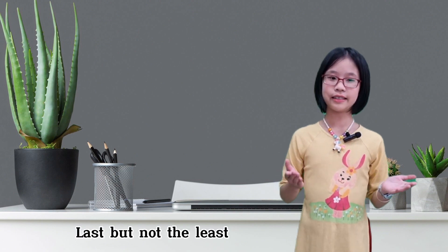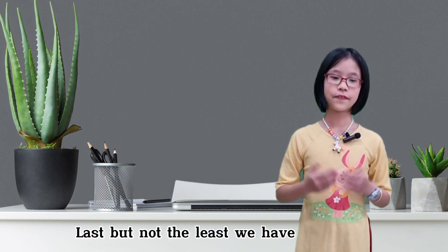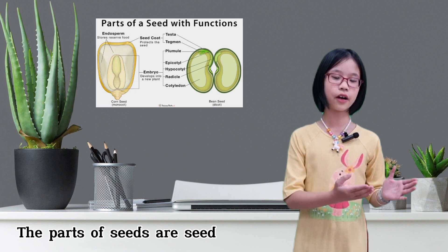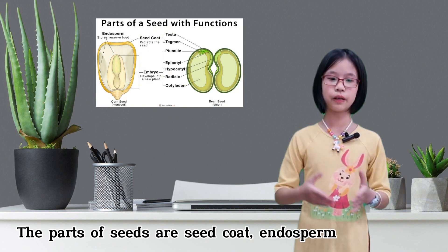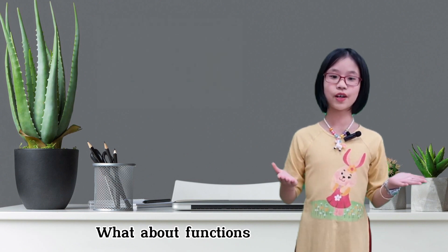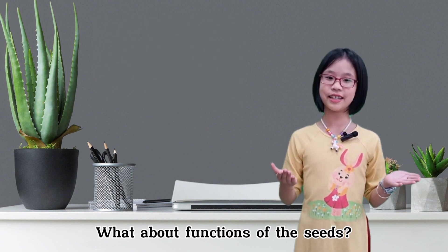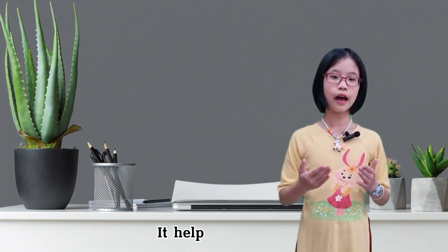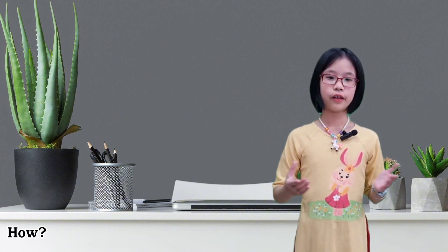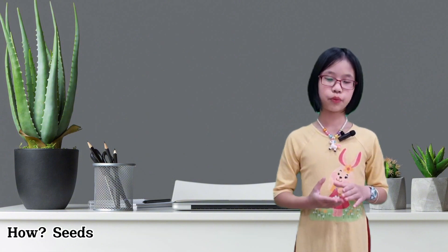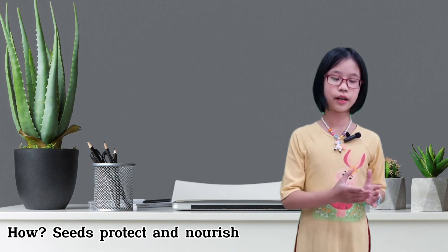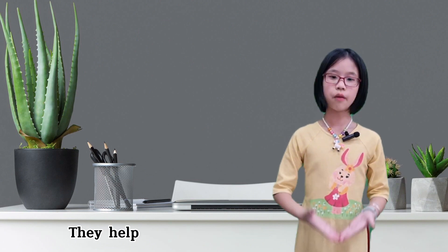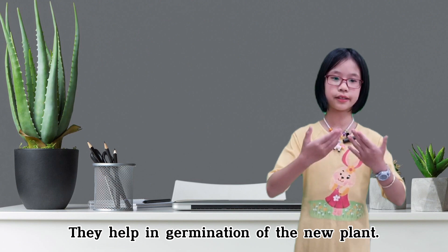Last but not least, we have seeds. The parts of seeds are the seed coat, and the sperm and embryo. The functions of seeds: they help in reproduction, protect and nourish the embryo or young plant, and help in germination of a new plant.